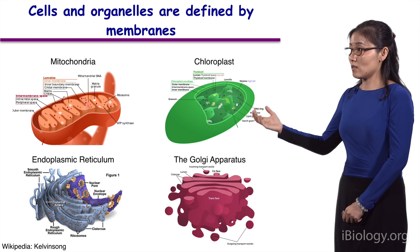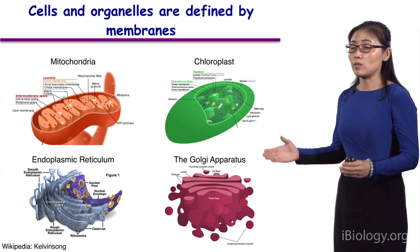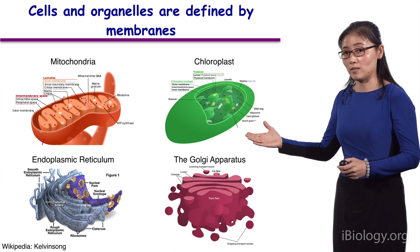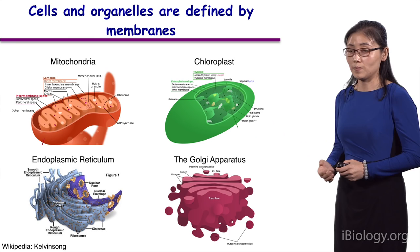Therefore, we have these organelles — mitochondria, chloroplasts, endoplasmic reticulum, the Golgi apparatus, etc. The presence of the membrane defines the boundary of a cell or an organelle. It protects the contents from the environment, and it allows the simultaneous occurring of different chemical reactions. So they help life; they keep life in order.